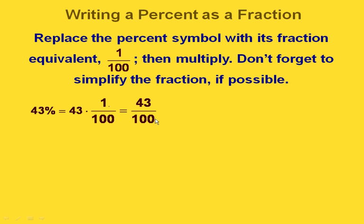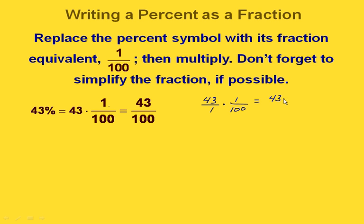That gives us 43 hundredths. And remember, if you're multiplying fractions times whole numbers, we could write our 43 as 43 over 1. And we would have that times 1 over 100. So on the top, we end up multiplying the 43 and the 1, and on the bottom, we have the 1 times 100.